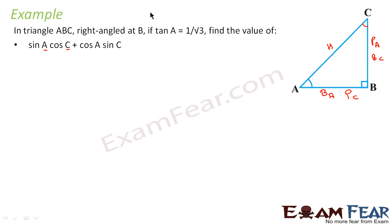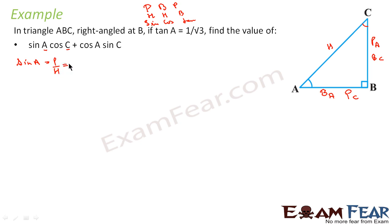Now we have to find sin A and cos C. Using the mnemonic — Pandit Badri Prasad, Hari Hari Bole — sin is P/H, cos is B/H, tan is P/B. So sin A equals P of A divided by H, which is BC divided by AC.